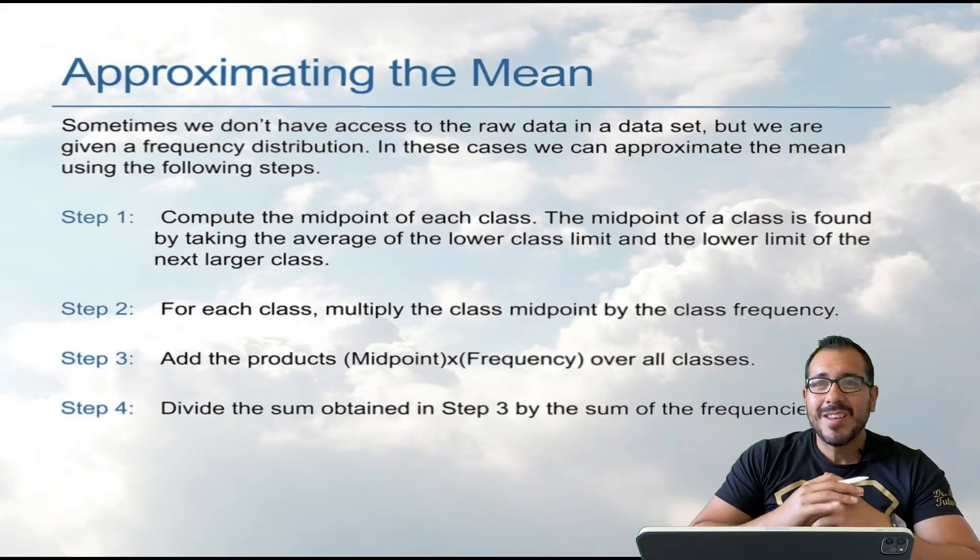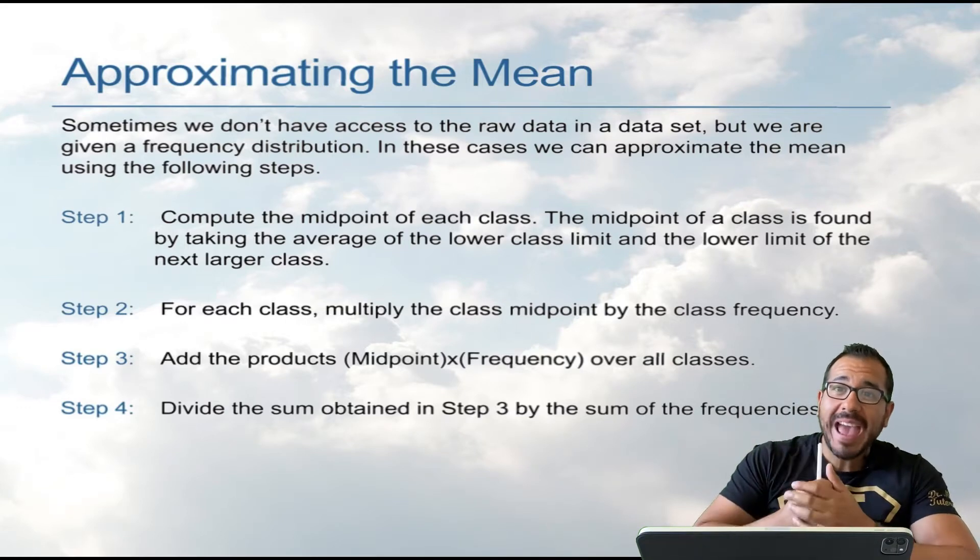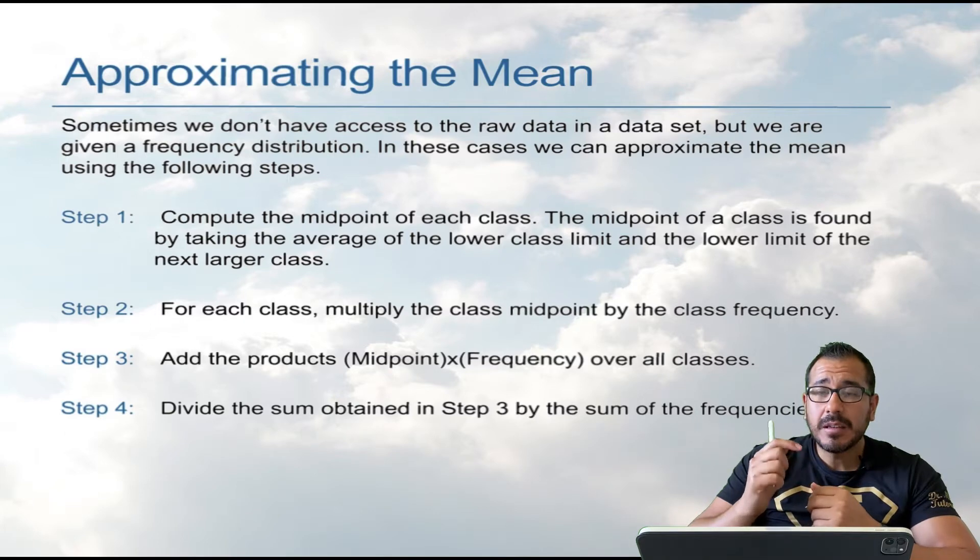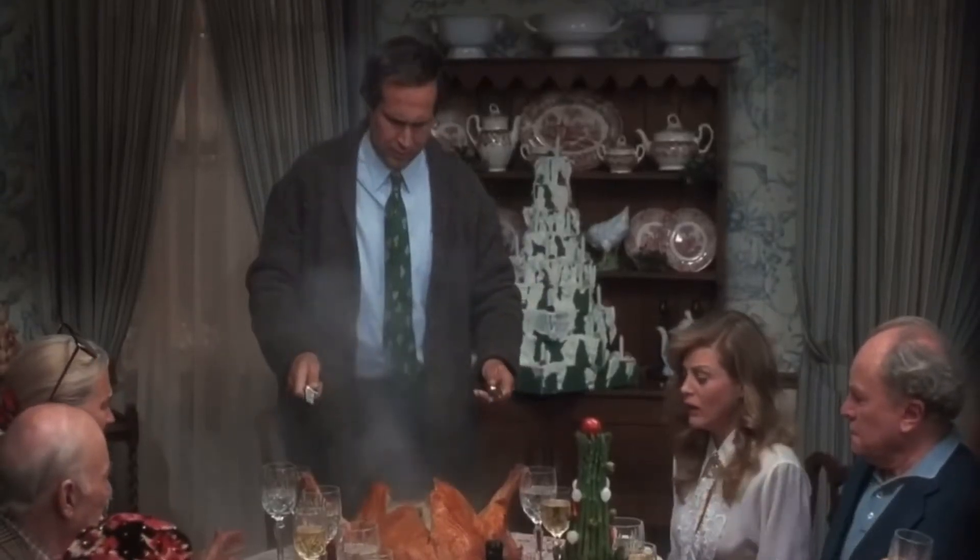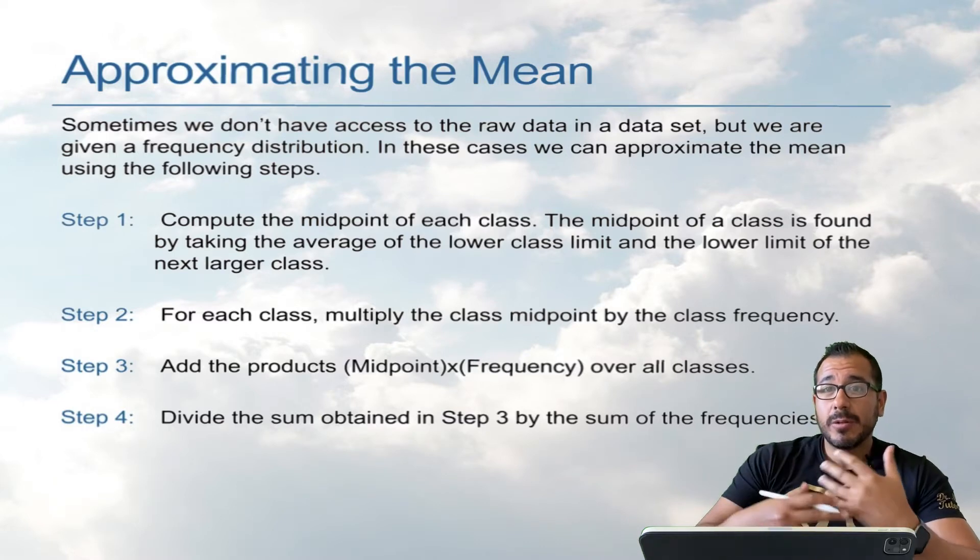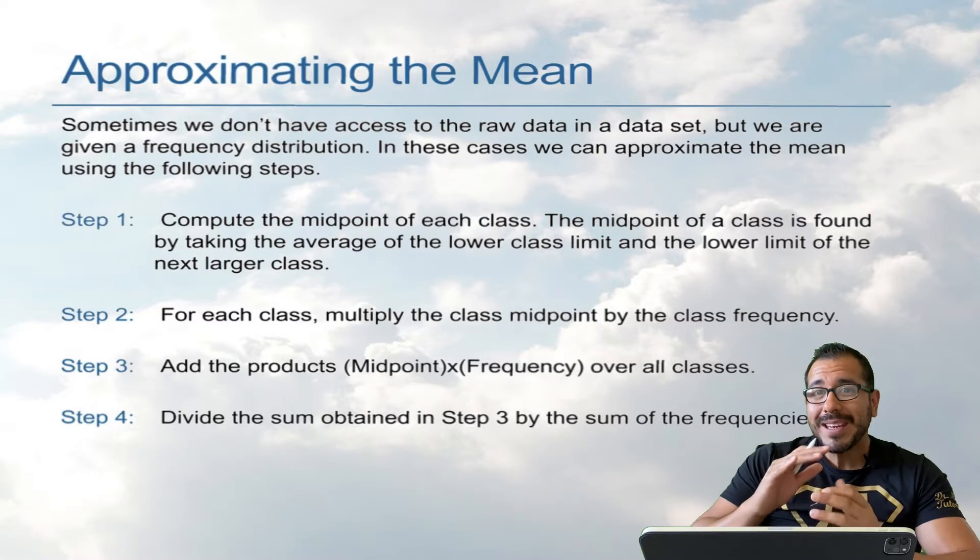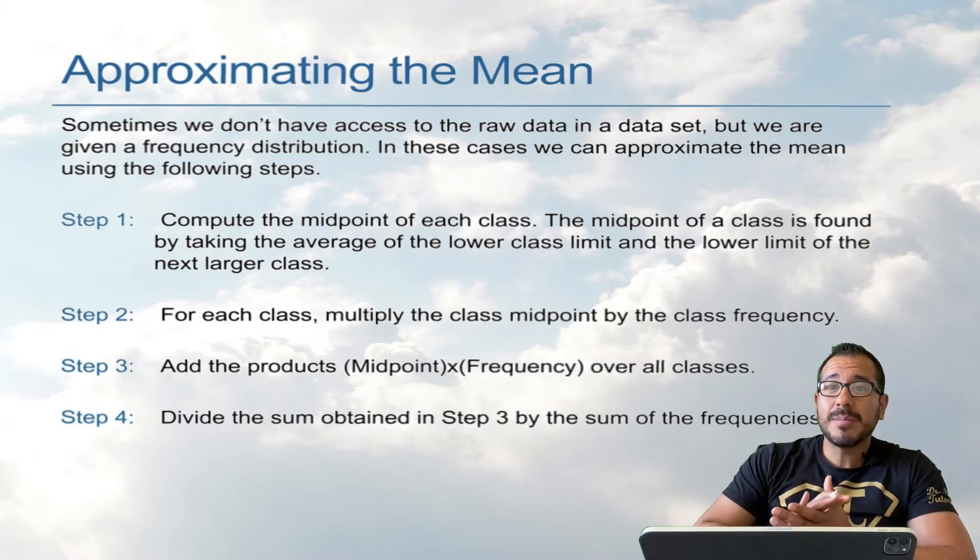All right, Mathletes, so here's the big idea. What happens when we don't have the raw data? What are you talking about? The data's undercooked. No, what we're looking at is sometimes the data is already summarized for us, so we might not have all the data values. We might just have it already grouped for us. All right, so how do we approximate the mean?